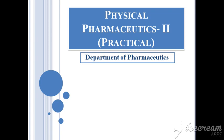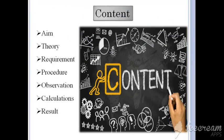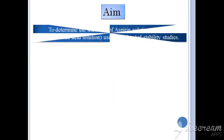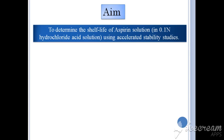Today, we will be studying one of the most important practicals from Physical Pharmaceuticals. We will be going through the aim of the practical, theory associated with the practical, requirements and procedure, observation table, calculation and formulas, and at the end the result. The aim of today's practical is to determine the shelf life of aspirin solution in 0.1 normal hydrochloric acid solution using accelerated stability studies.